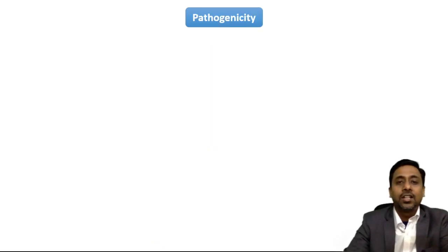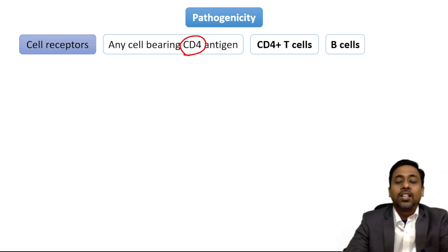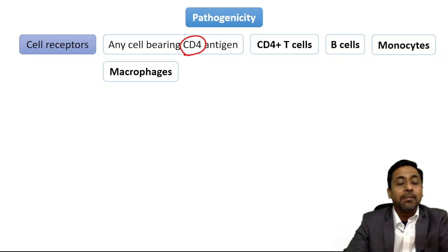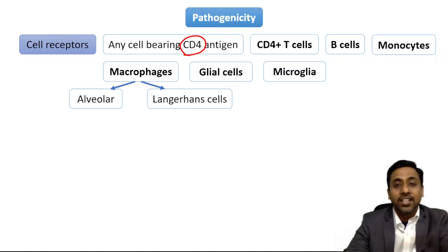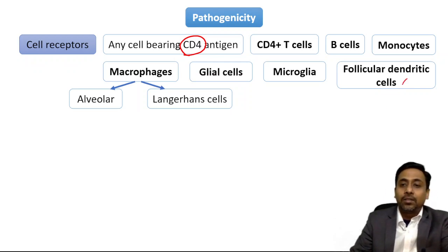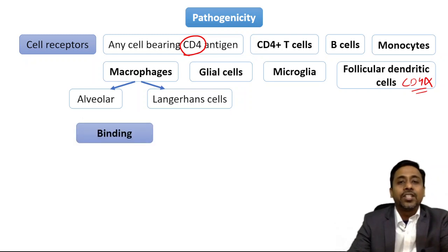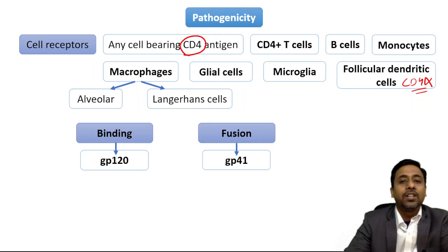Regarding pathogenicity, the receptor is any cell bearing the CD4 antigen. Apart from T cells, other cells that bear CD4 include B cells, monocytes, macrophages including alveolar macrophages, Langerhans cells, microglial cells in the CNS, and follicular dendritic cells — although follicular dendritic cells do not bear the CD4 antigen, they can be affected by HIV. There are two steps in pathogenesis: binding mediated by GP120 and fusion mediated by GP41.